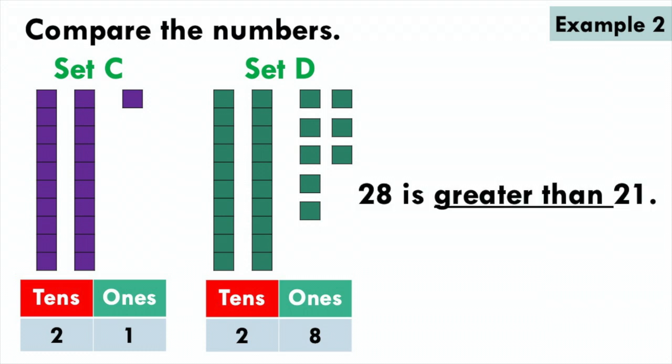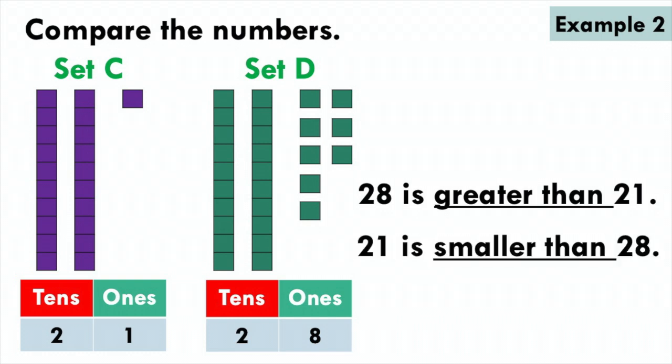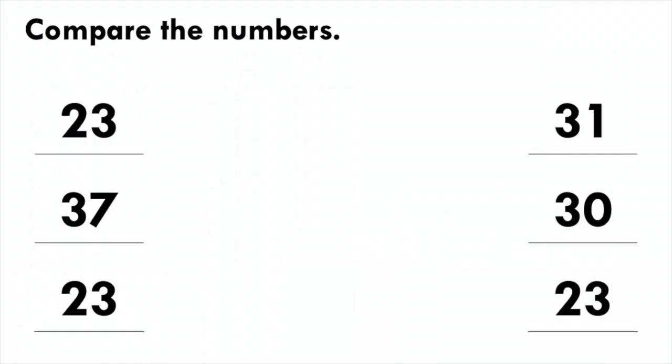I also know that since 1 is smaller than 8, 21 is smaller than 28.